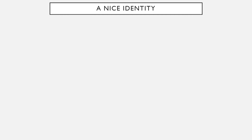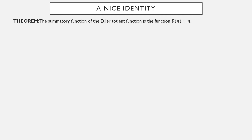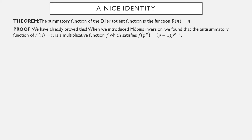Now we're going to establish a pretty nice identity. The summatory function of the Totient function is the straightforward function F(n) = n. In fact, we already proved this in the previous video on Möbius inversion. We found that the anti-summatory function of F(n) = n is something which is multiplicative and evaluates prime powers in a certain way. But the Totient function is multiplicative and evaluates prime powers the same way. If this f is multiplicative and φ is multiplicative and they compute prime powers the same way, then they compute everything the same way and they are the same function.